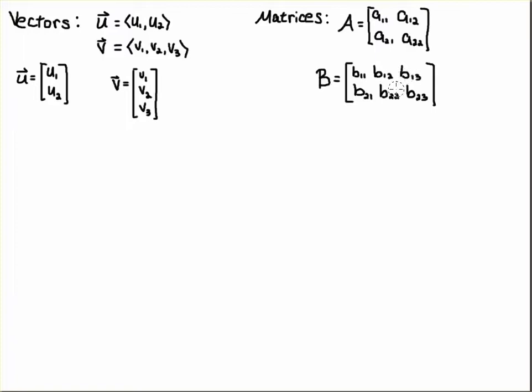Second row first column, second row second column, second row third column. Here, in the vectors, you only have the entries and we don't use a subscript.